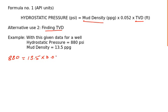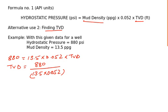TVD which we have to calculate. TVD will be equal to 880 divided by 13.5 and 0.052. Or the calculator approach which is faster for calculation: you can write it as 880 divided by 13.5, then again divided by 0.052.